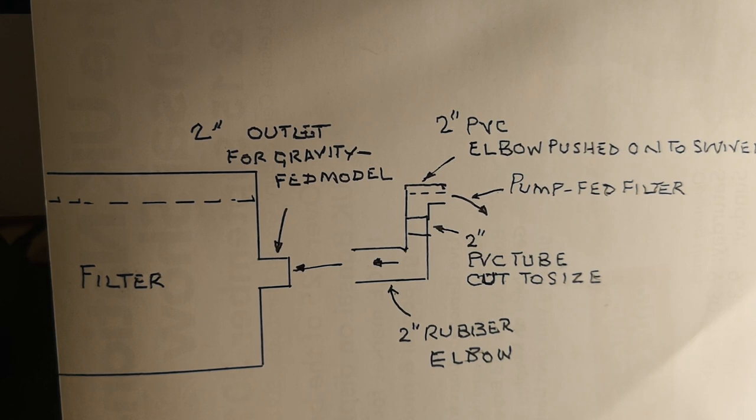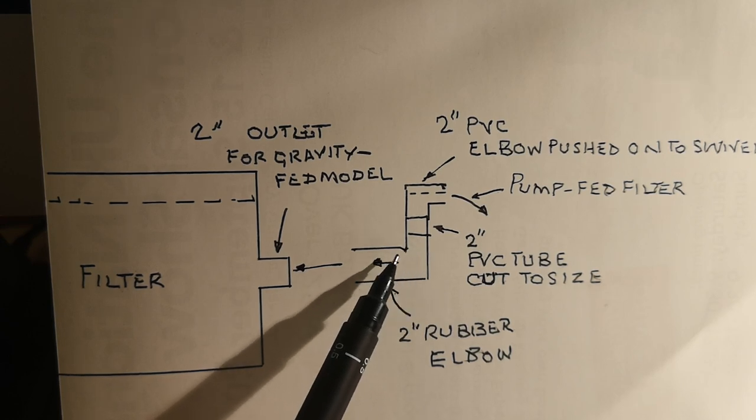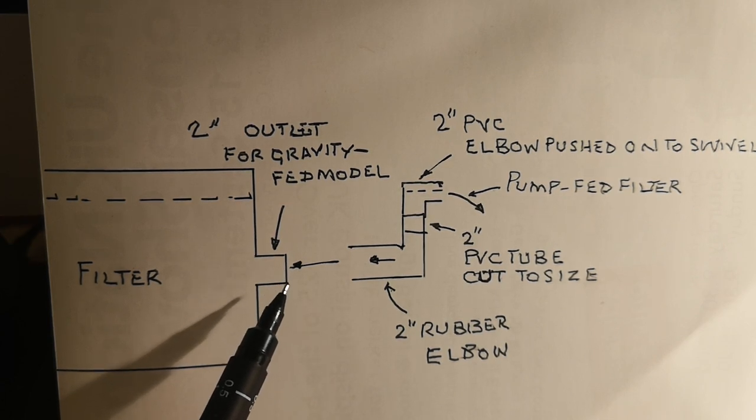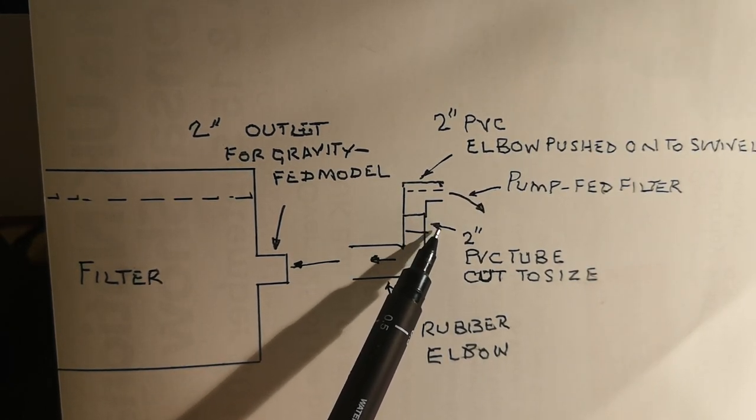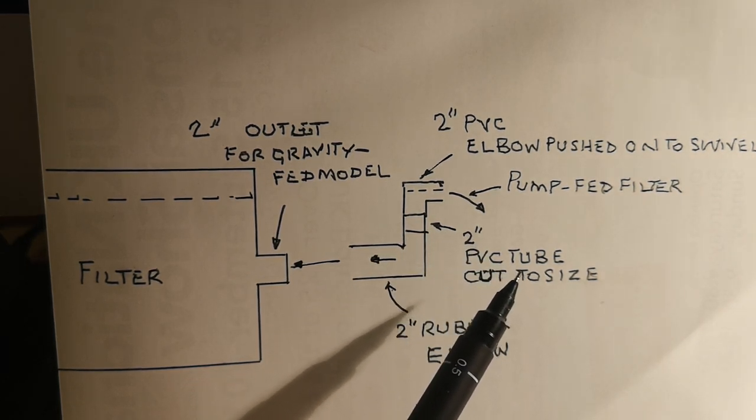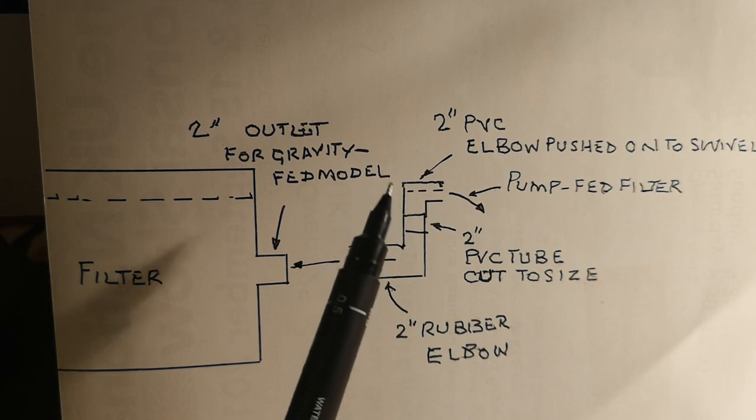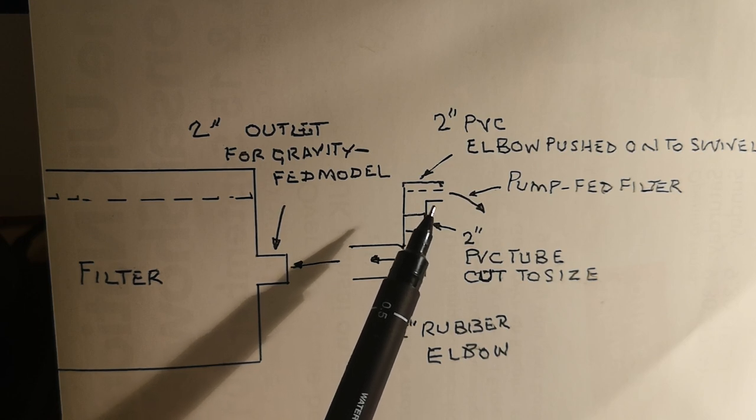It's quite a simple part. This is a 90-degree rubber bend that will fit onto the existing stub. To that we add a short length of PVC tube that's cut to size.